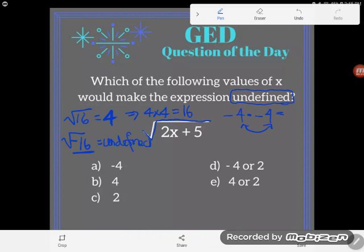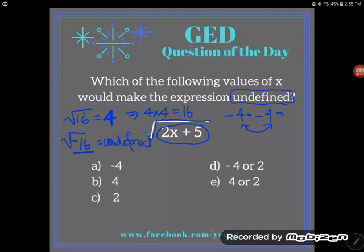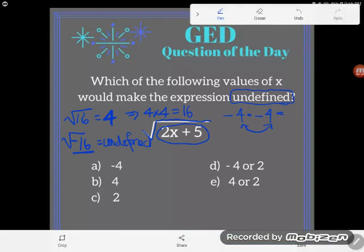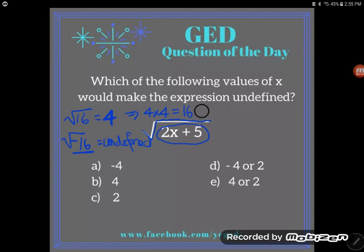So basically, if you have a negative inside a square root, you're going to get an undefined answer. And say that again: if you have a negative inside a square root, you're going to get an undefined answer. So after all that talk, let me show you how to do the problem.